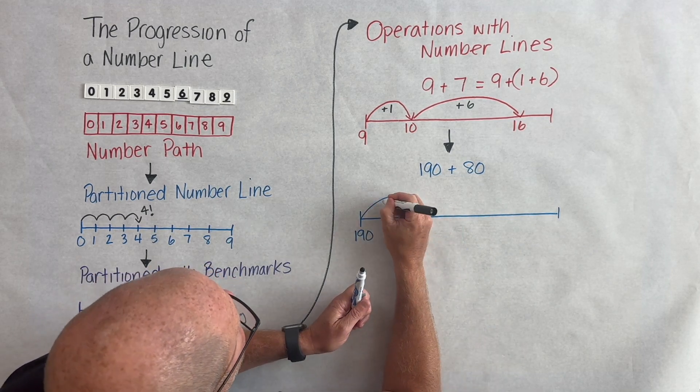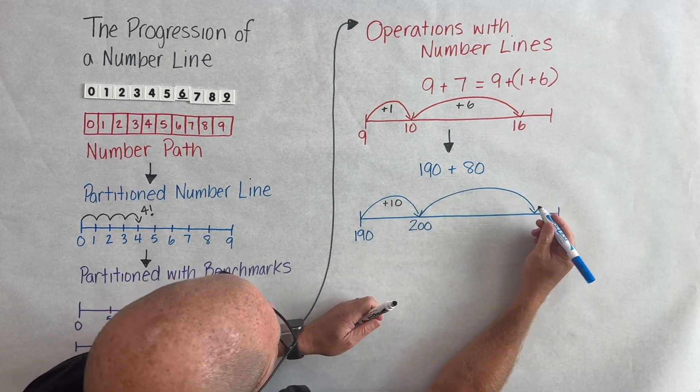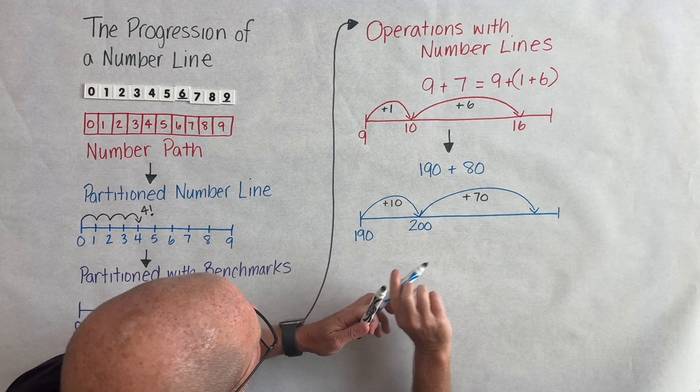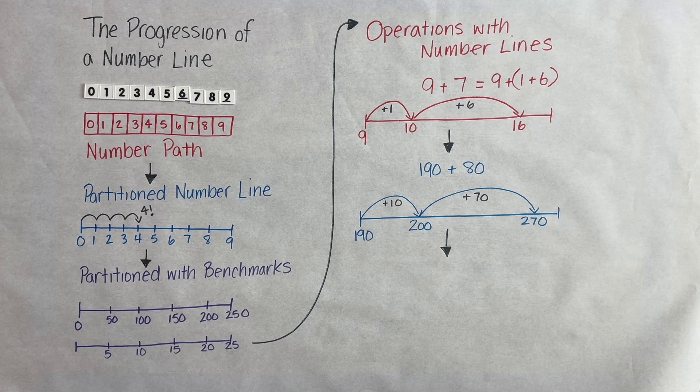And this thinking scales up into multi-digit computation in second grade where students might be adding 190 plus 80. Here we make a jump of 10 and a jump of 70 and that gets us to 270.